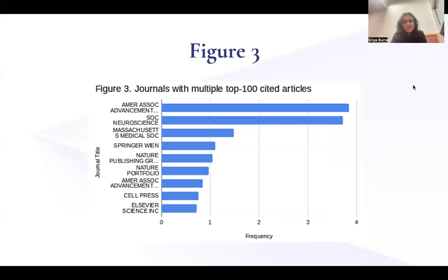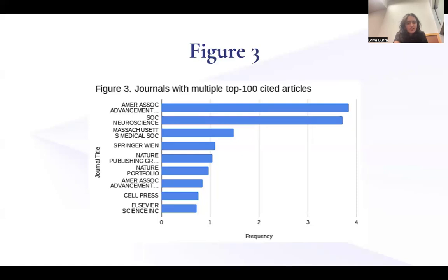Our next figure is figure three, which is journals with multiple top 100 cited articles. Like the previous two figures, this was created in Google Sheets, but we received our data from Web of Science. On the x-axis we have frequency, and on the y-axis we have journal title. The journal with the highest frequency is the American Association for Advancement, and it has about four.